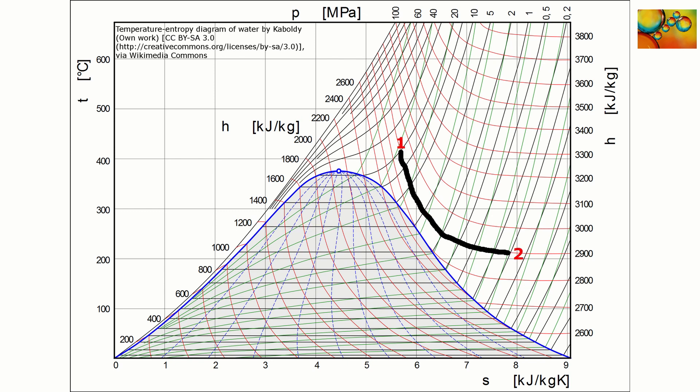Here, the process that happens between states 1 and 2 occurs at constant enthalpy. It's called an isenthalpic process. An example of isenthalpic process is the expansion of a fluid through a perfectly insulated valve.